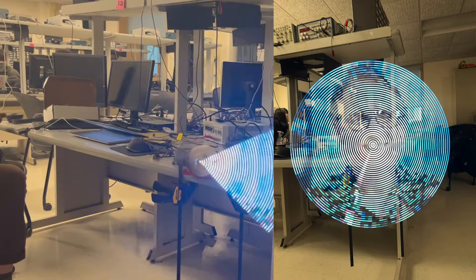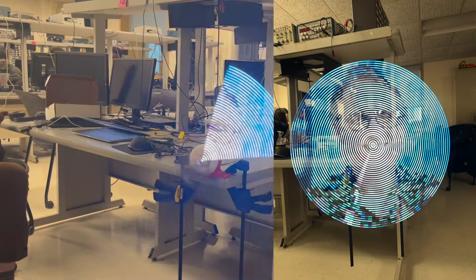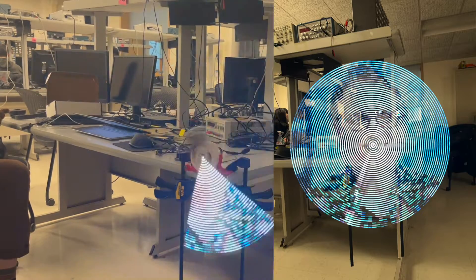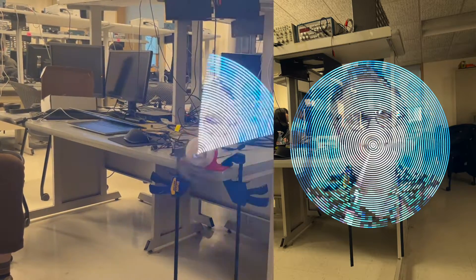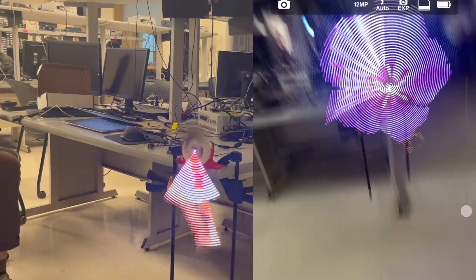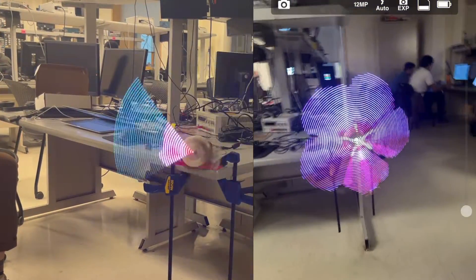And then you can also send, we can also send multiple images, like, back to back, and it kind of looks like a GIF. Okay. It's a little slow, but as you can see. So this is, like, a flower blooming, so it starts in the bud, and then you can see it grow over time.